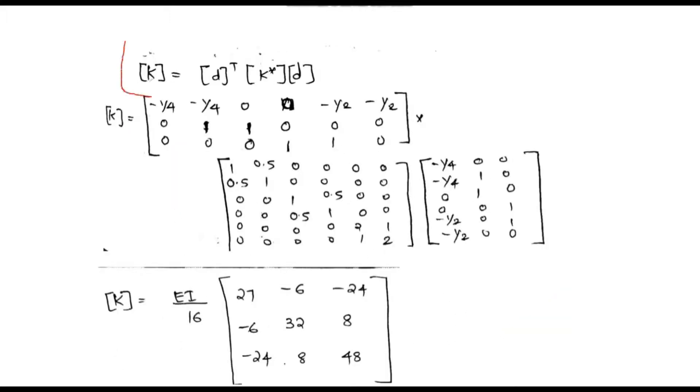Now using the equation to find out the K matrix, the matrix K will be equal to matrix D transpose into matrix K star into matrix D. Substituting the values, we will get the value of matrix K.